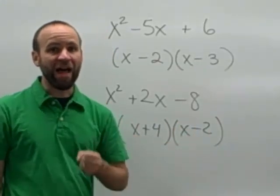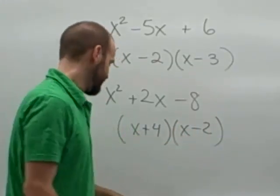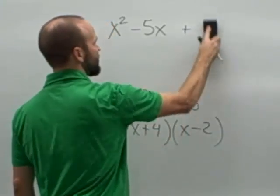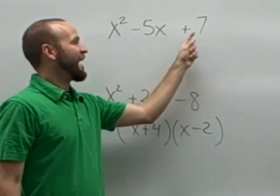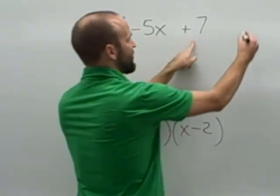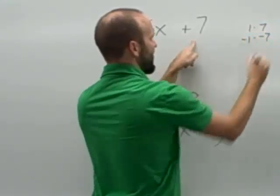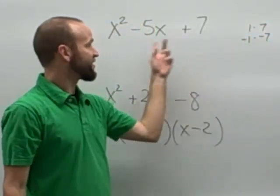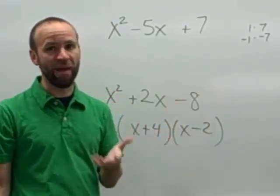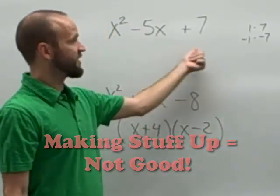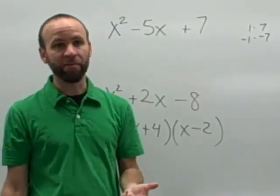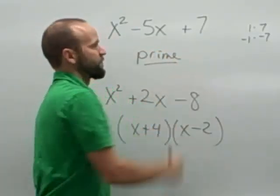Now, one thing that's really important: not every trinomial can be factored. For example, let's take this first example and instead of plus 6, what if I made this plus 7? Now we're looking for factors of 7 whose sum is negative 5. The only factors of 7 we have are 1 times 7, and negative 1 times negative 7. Neither one of those have a sum of negative 5, so if those two factors don't exist, we cannot factor this one — don't make something up. We would treat this polynomial like a number that can't be factored. Numbers that can't be factored we call prime, so this trinomial is, in fact, prime.